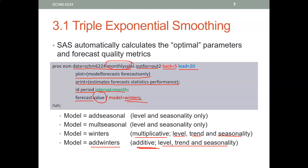Which one should you use in your assignment? You should look at your data and see if there's a trend or not. If there's a trend, you should use one of the trend models; if there's no trend, use one without. The choice between the two depends on whether you think there's additive or multiplicative seasonality. You could also try each one and see which fits best — there's nothing that says you have to pick one; you can try all of them.